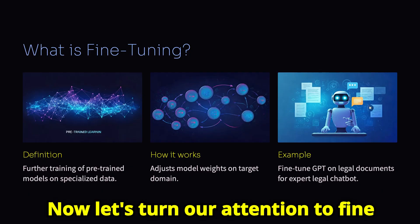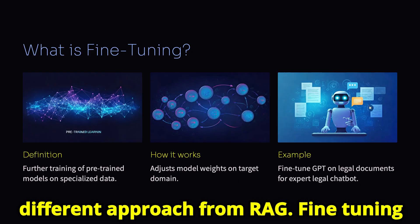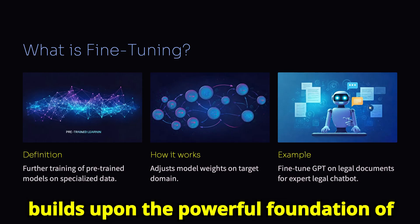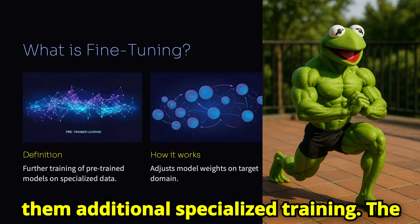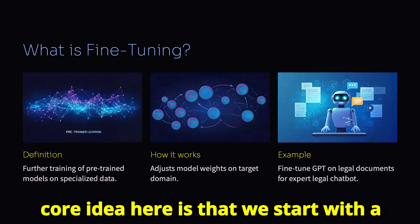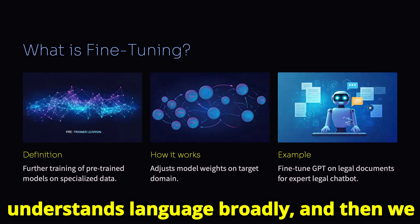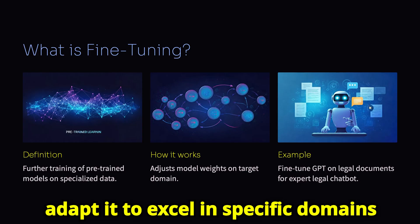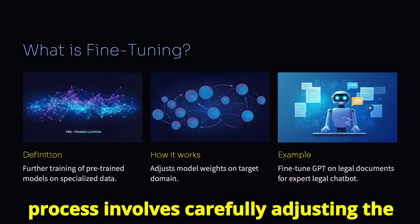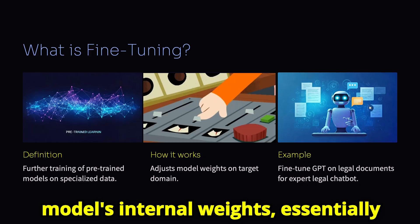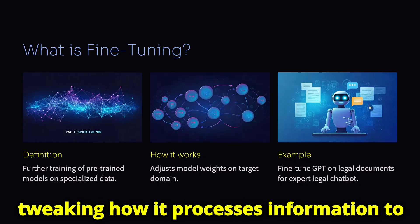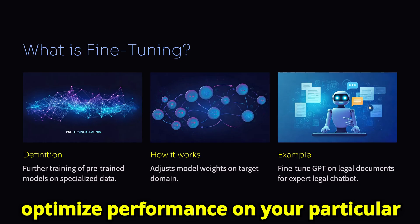Now let's turn our attention to fine-tuning, which takes a fundamentally different approach from RAG. Fine-tuning builds upon the powerful foundation of pre-trained language models by giving them additional specialized training. We start with a general-purpose model that already understands language broadly, and then adapt it to excel in specific domains through targeted training. The technical process involves carefully adjusting the model's internal weights, essentially tweaking how it processes information to optimize performance on your particular type of data.